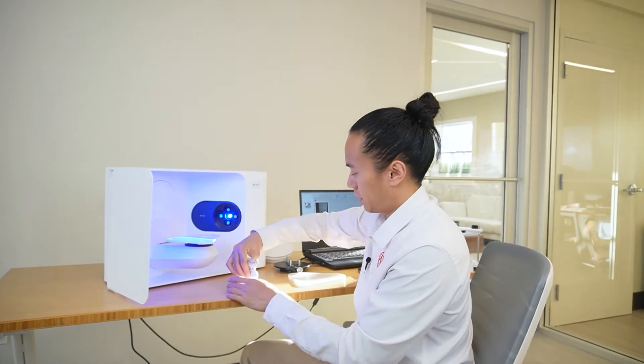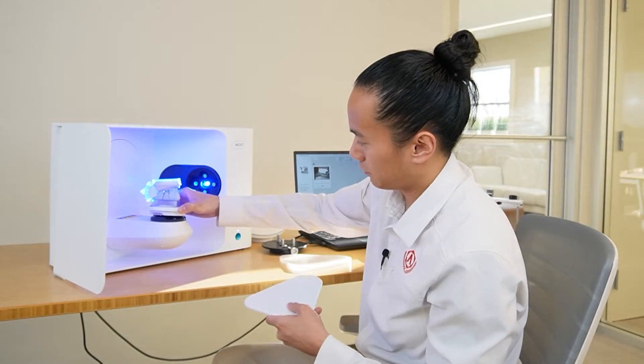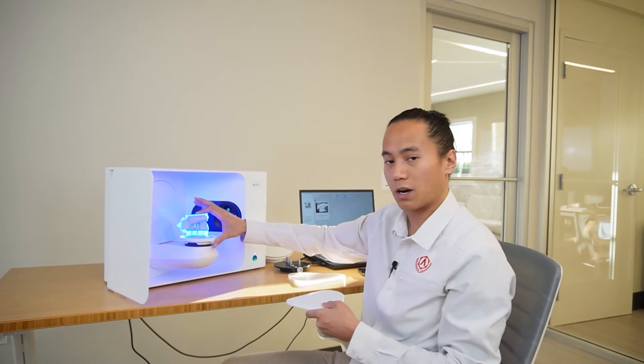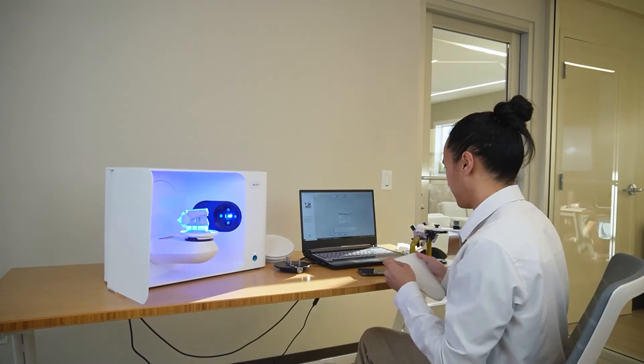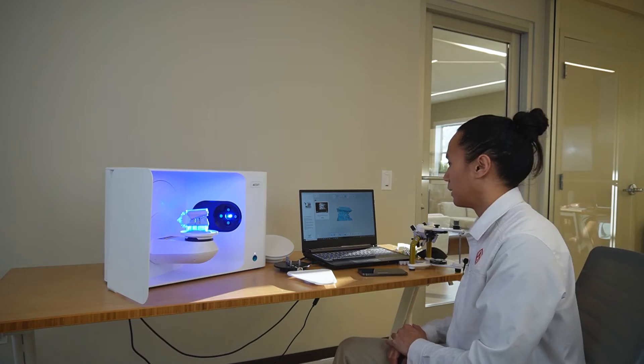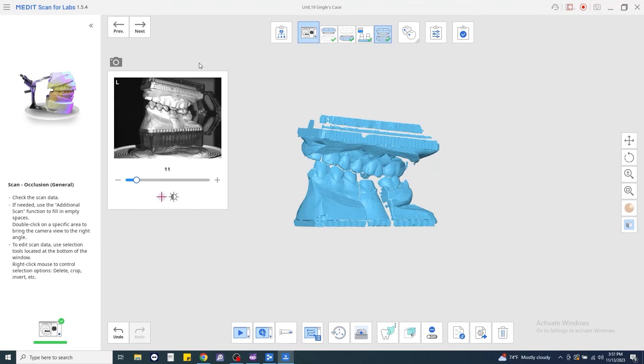We'll place our models on our plate. Make sure everything is stable. Don't forget to double check your brightness and then click scan. Once everything looks good, we'll go ahead and click next.